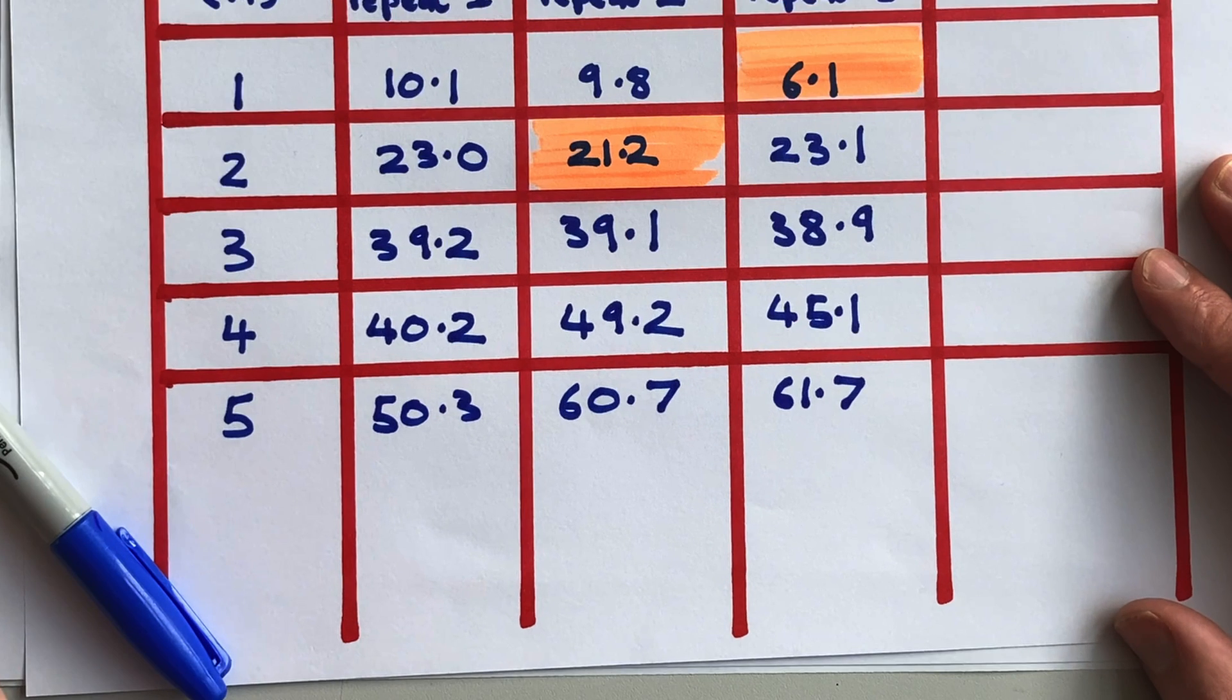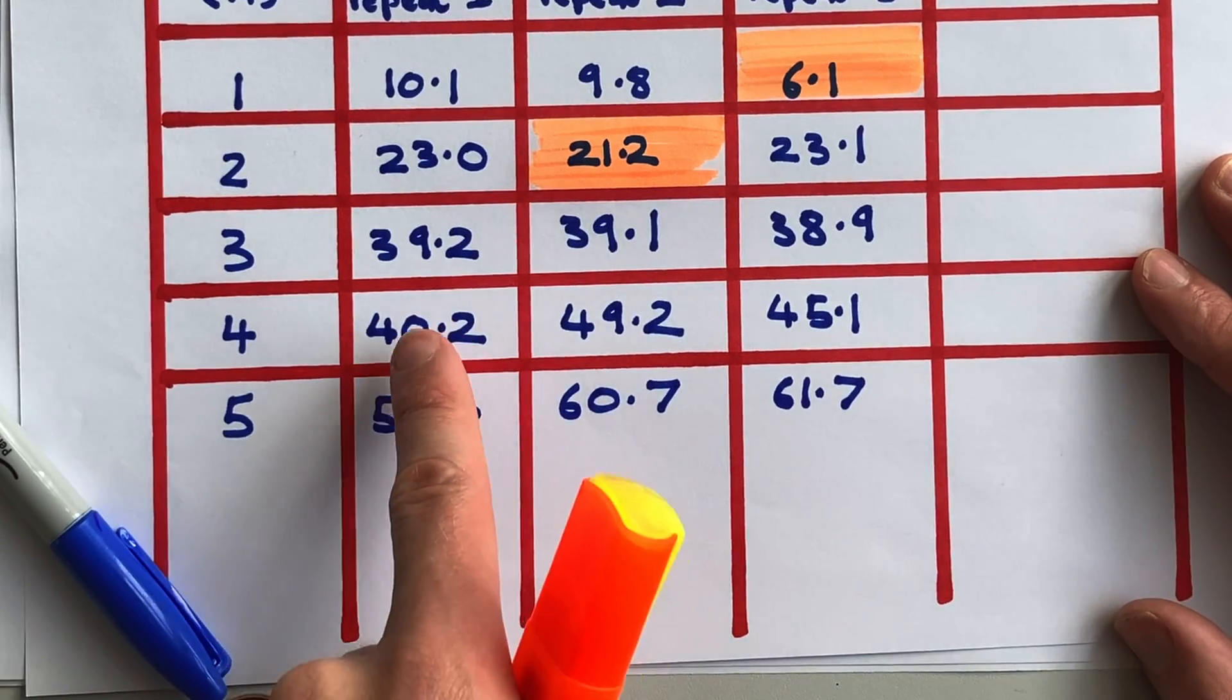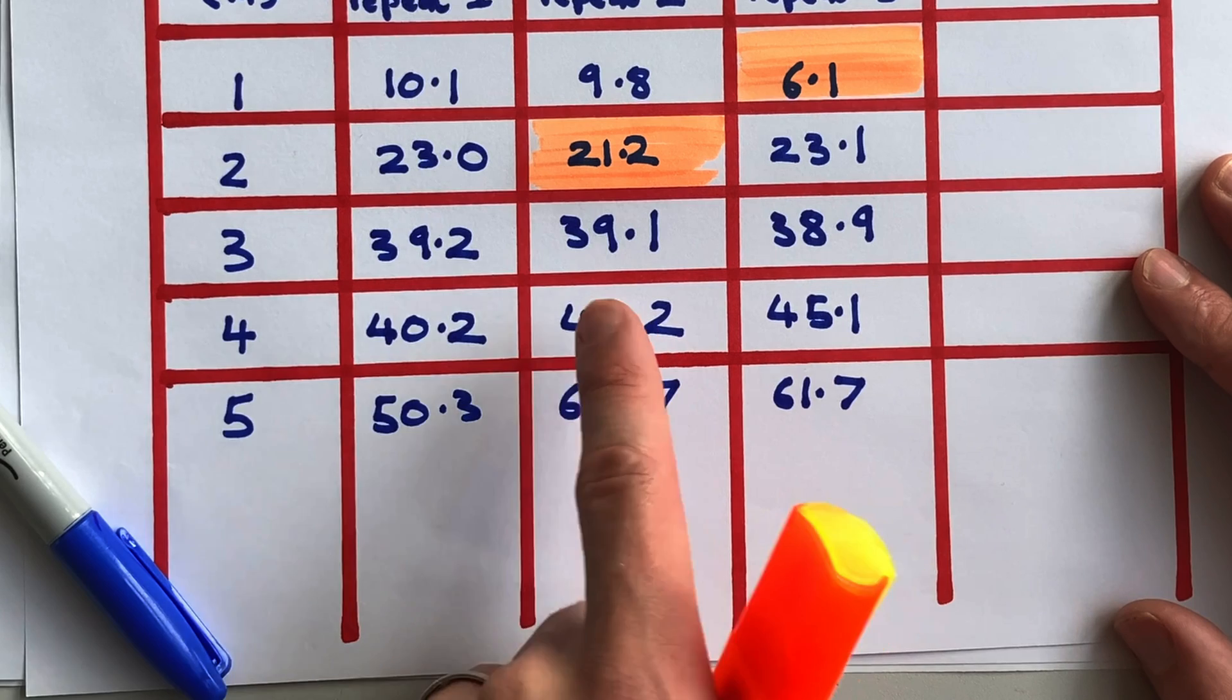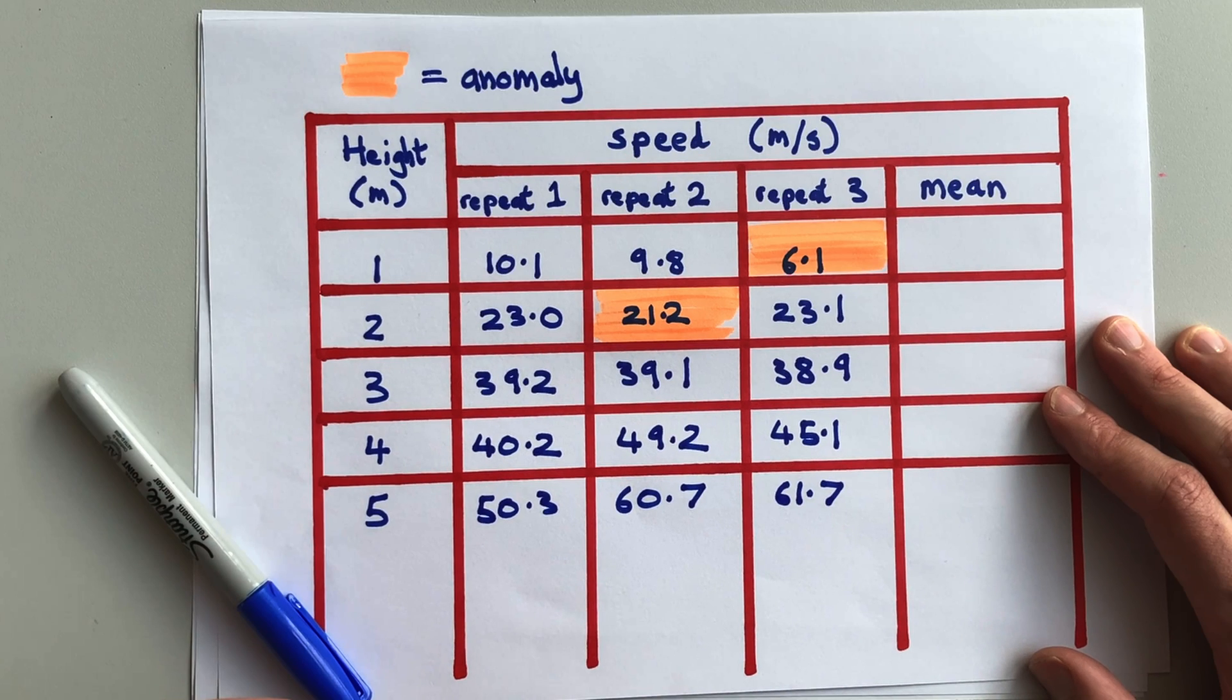The fourth row is a tricky one. All the numbers are spread out. In this case, what we do is we compare the highest and lowest number to the number in the middle. 40.2 and 45.1 are about five apart, and 45.1 and 49.2 are also about five apart. So in this case, they're evenly spread.